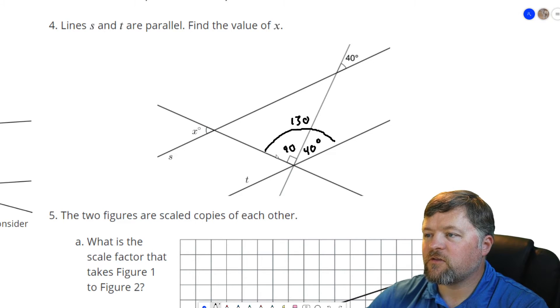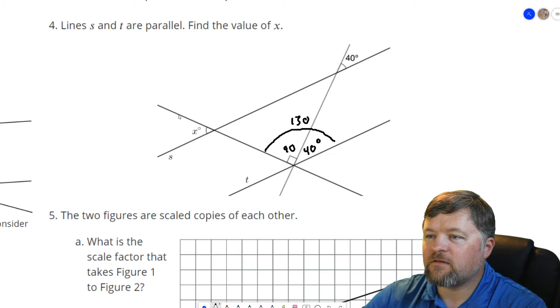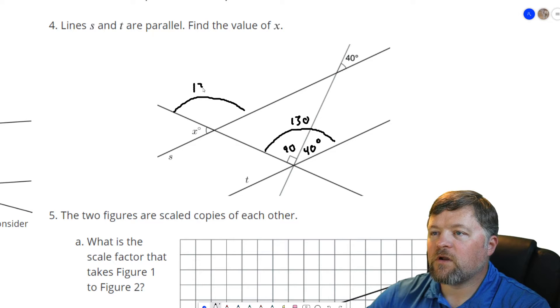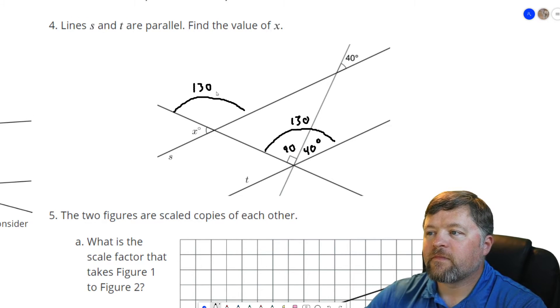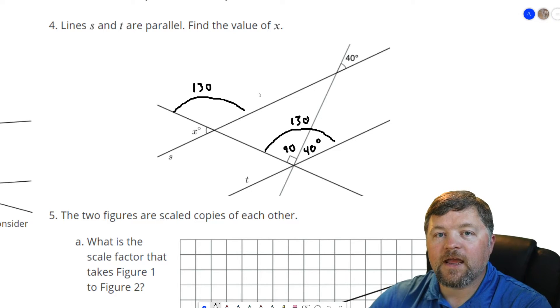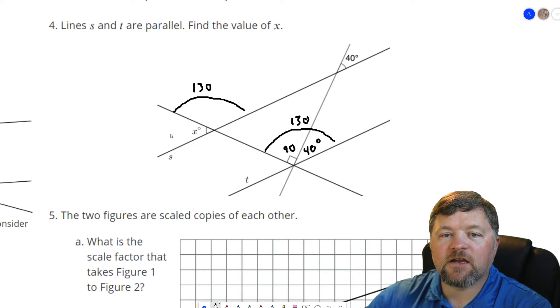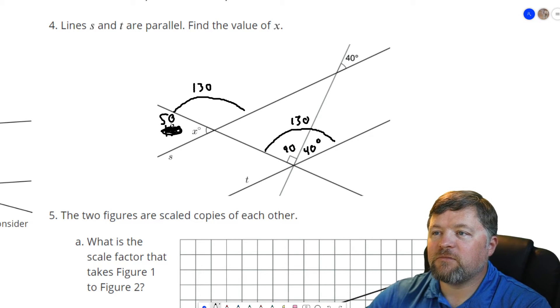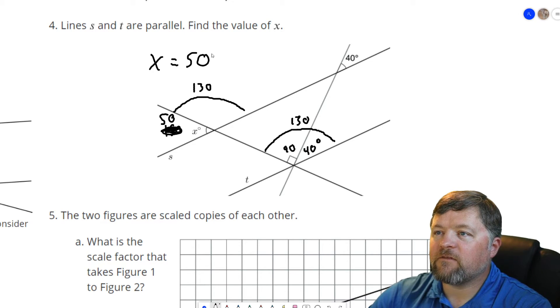Well, this 130 degrees, because S and T are parallel, that means this right here also has to be 130 degrees. If that is also 130, we know that this measurement here has to add up to 180. Well, 130 plus what would give us 180 degrees? That's 150 degrees. Nope, not 150 degrees. 50 degrees. 130 plus 50 is 180. So X is a 50 degree angle.